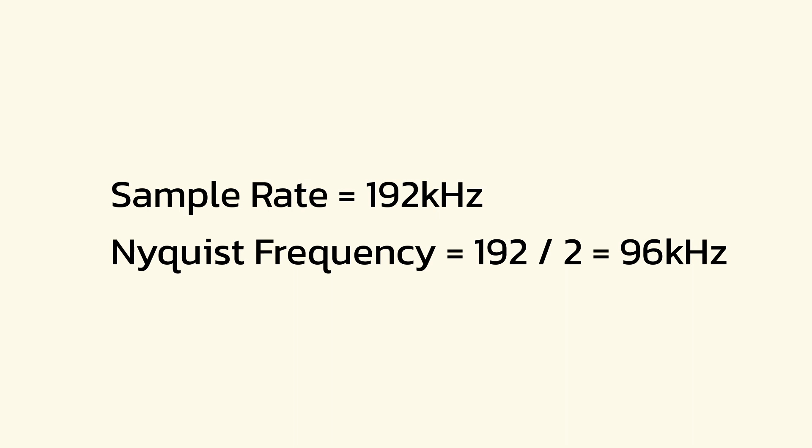A true square wave needs an infinite number of sine waves with an infinitely high frequency, but due to the constraints of the sampling rate, the highest frequency we can hope to accurately represent is 96 kHz, so any sine waves that we need to make the square wave past 96 kHz won't be represented properly.